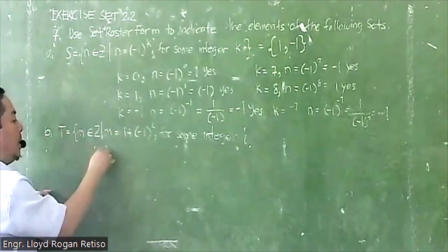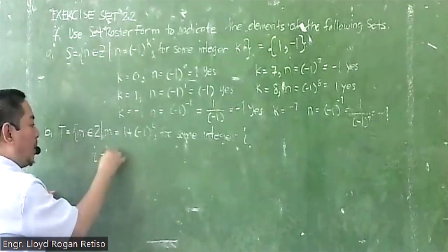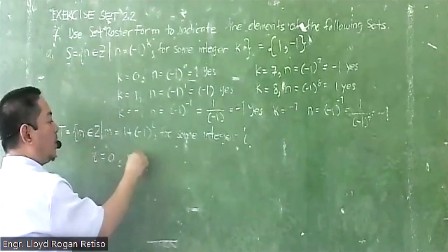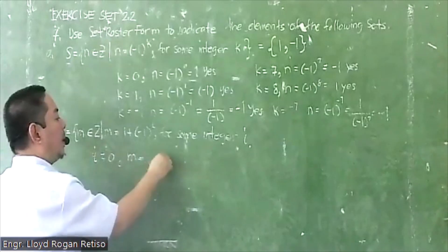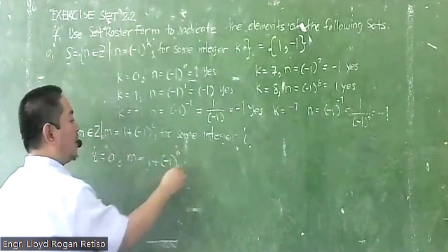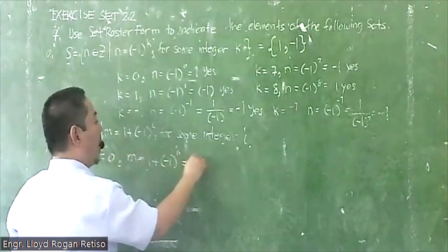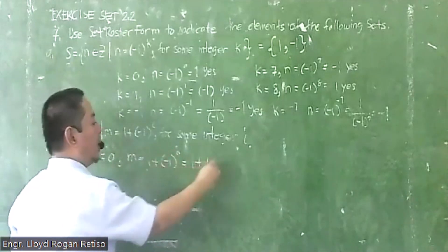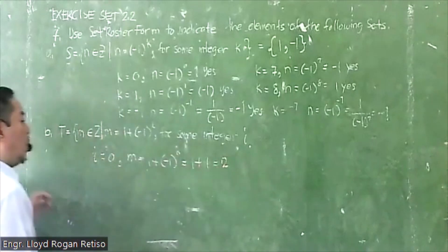So let's test values. If i equals 0, then m equals 1 plus (-1)^0, which is 1 plus 1. So that will be 2.